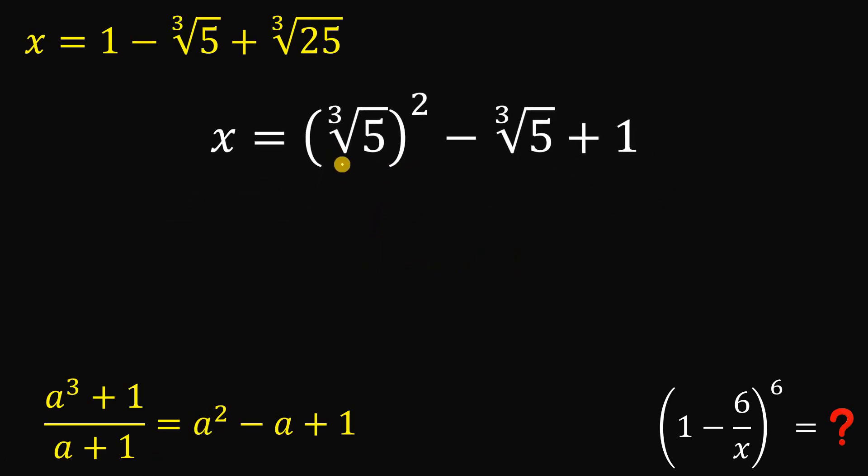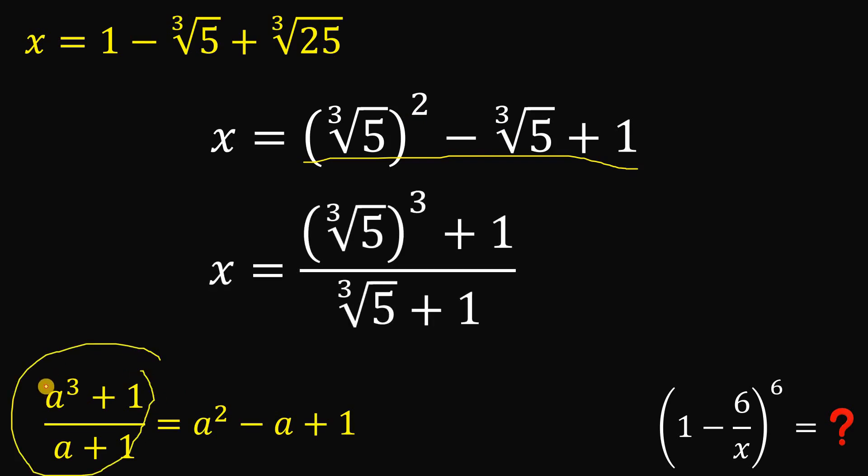Now, if cube root of 5 is a, then we can rewrite this as cube root of 5 squared minus cube root of 5 plus 1. So instead of using this format, we have cube root of 5 cubed plus 1 over cube root of 5 plus 1.